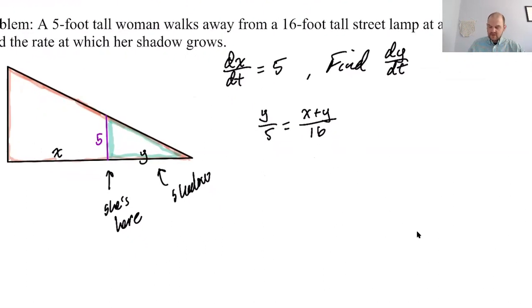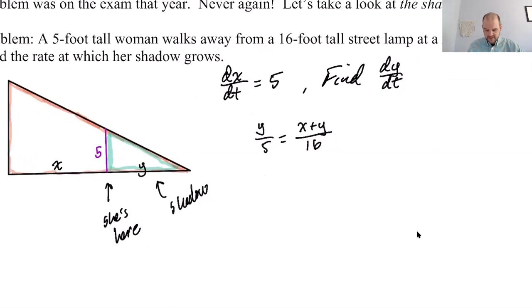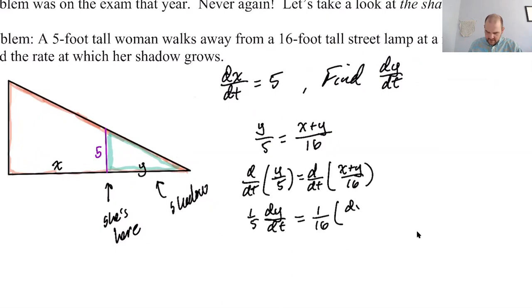So since they are similar, we can say that y over 5, the horizontal part to the vertical part of the small triangle is equal to the horizontal part, which is x plus y over 16. And that's got to be true because they're similar triangles. So this is by similar triangles. And then we could just dive in and find derivatives here, because I think it's going to be easy enough to do.